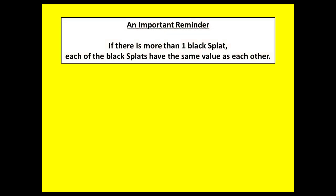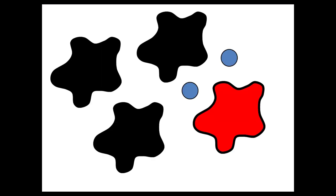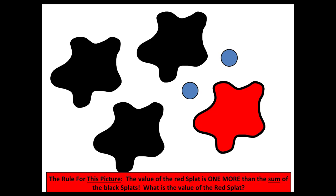Level three begins with the same reminder. And then on the first click, there are three black splats. This time, the rule is that the value of the red splat is one more than the sum of the black splats. You can see that the total is 21. And the question, as always, is what is the value of the red splat? Now on this slide, I will not spoil the answer. Instead, let's move to level four.